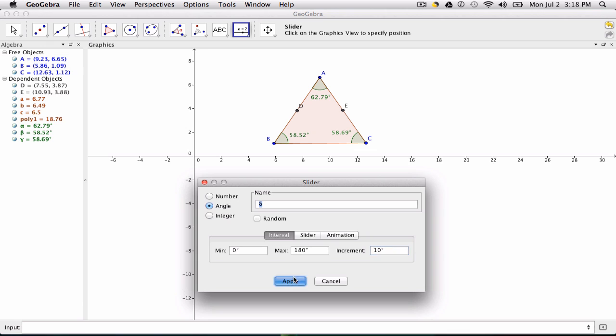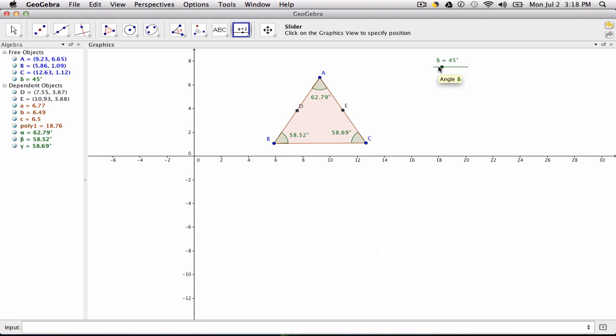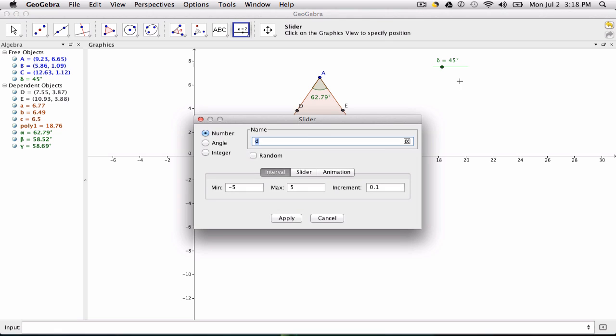Now we set up our next slider for our next variable, our next angle variable. And it automatically picks the next letter in the Greek alphabet. And we want the maximum again to be 180, and increments of 10. Of course you can change that, although I think it does make the most sense to use a max of 180 in this case.